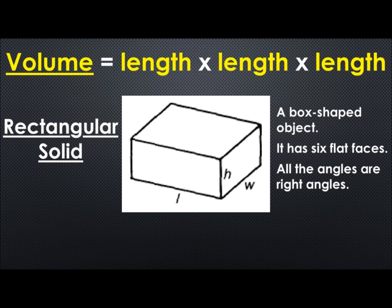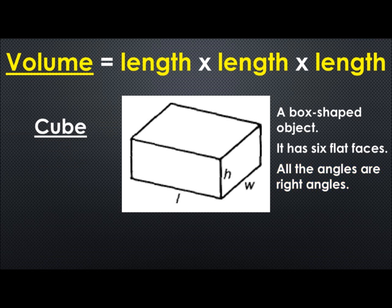Now let's define this shape. This is a rectangular solid. A rectangular solid is a box shaped object. It has six flat faces and all the angles are right angles. This rectangular solid is also known as a cube and a rectangular prism.